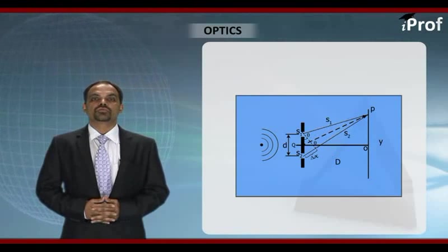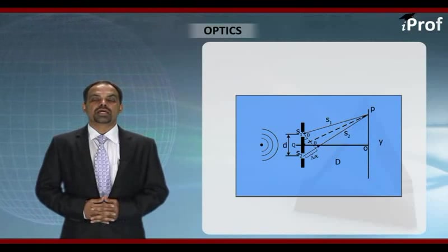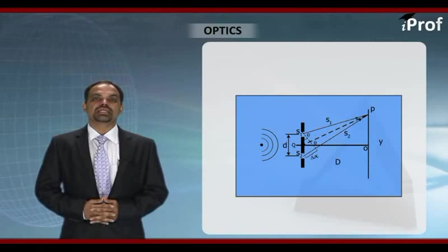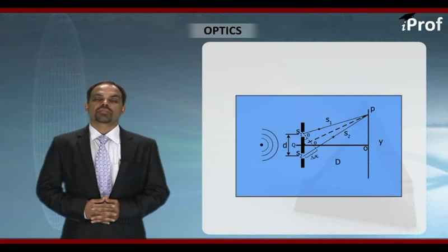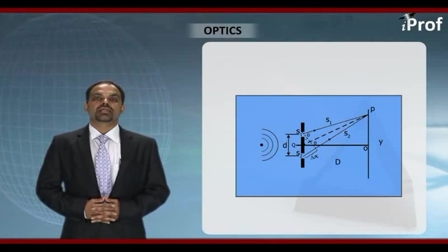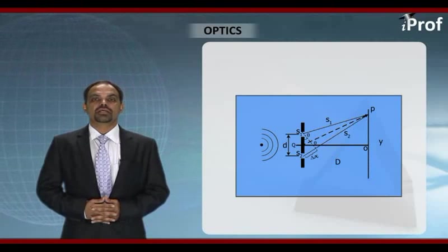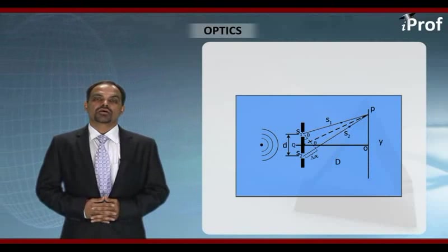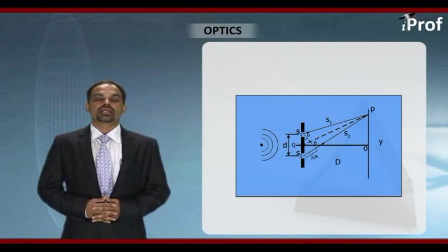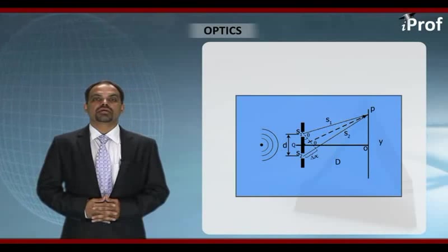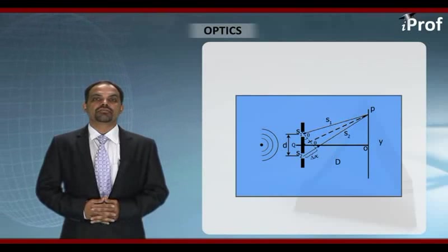And these two parts will be coherent throughout the experiment. Therefore, we get a sustained interference. As we have already discussed, for sustained interference, sources must be coherent. Before we enter into analysis of this experiment, we need to go for path difference calculation.